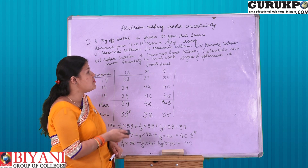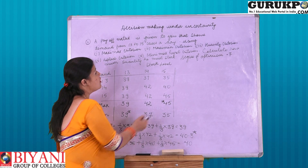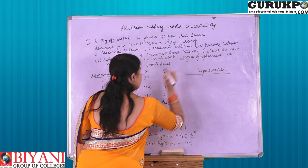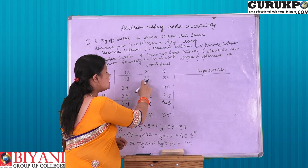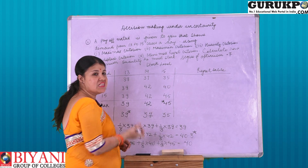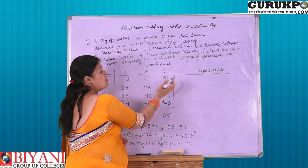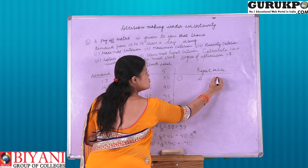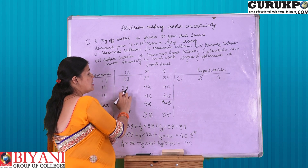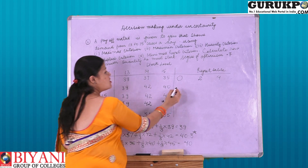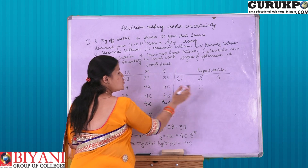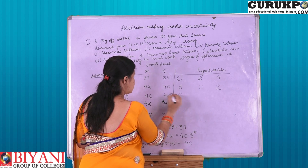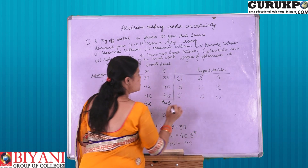Moving on to the next, that is Minimax regret criteria. We have to make a regret table. To frame the regret table, we subtract the maximum entry from the other entries in the respective rows. For the first row: 39 − 39 = 0, 39 − 37 = 2, 39 − 35 = 4. For the next row, the maximum entry is 42: 42 − 39 = 3, 42 − 42 = 0, 42 − 40 = 2. For the last row, the maximum entry is 45: 45 − 39 = 6, 45 − 42 = 3, 45 − 45 = 0.